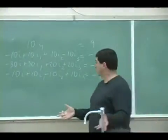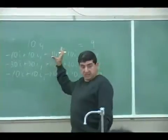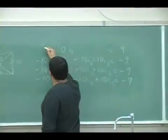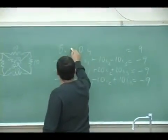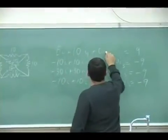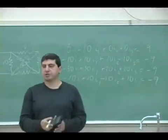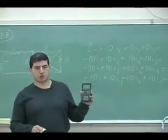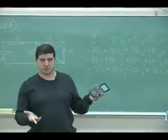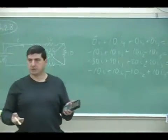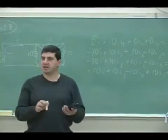You could either do it that way, or you could keep it like this. Just write this as 0I, 0I2, 0I3. You could keep it like that, and then just put it into the simultaneous equation solver, four equations, four unknowns. It doesn't really matter. One is not necessarily easier than the other.